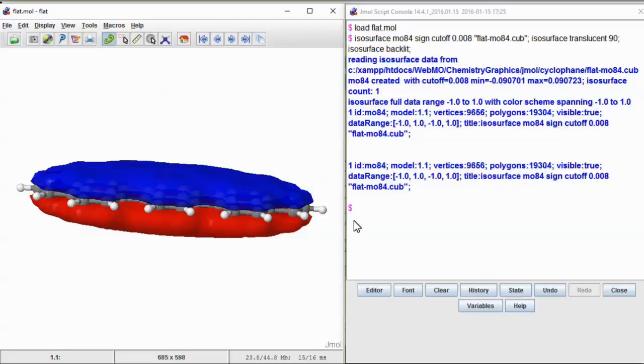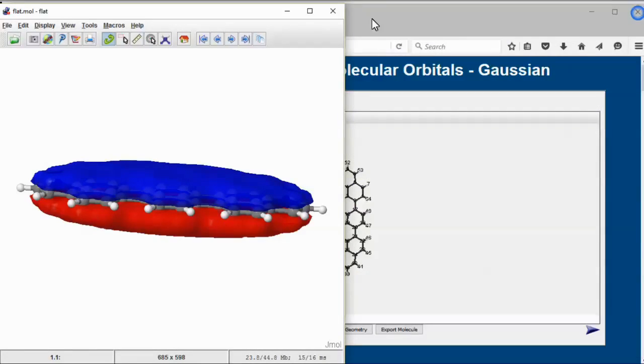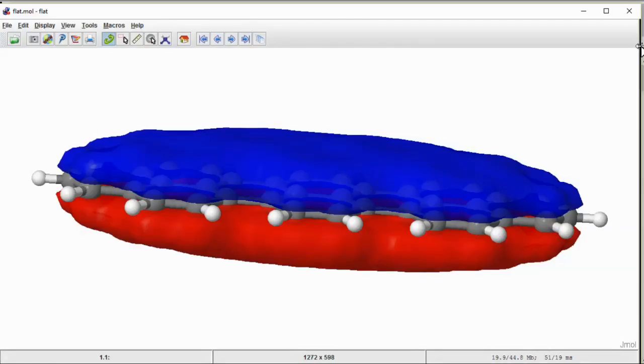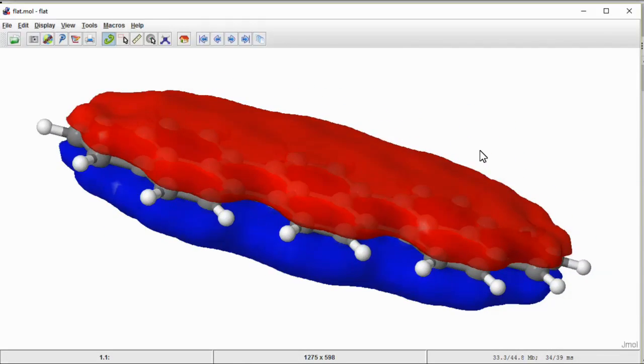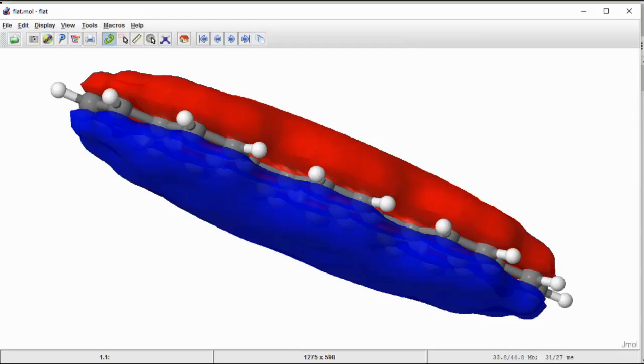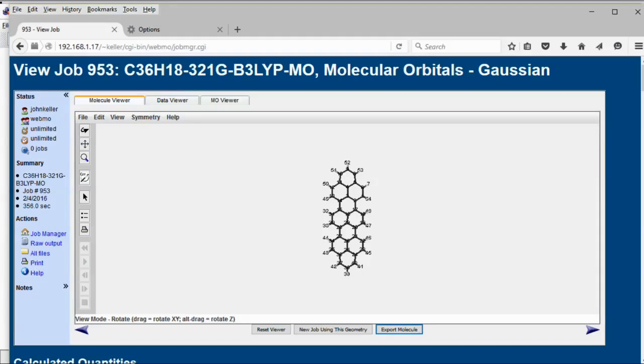Resize the window. This Jmol window is now running in the background. To switch between the PowerPoint slides and this Jmol window, hit alt-tab keys.